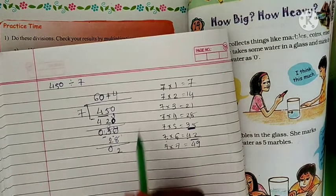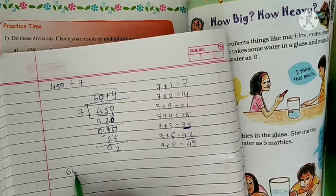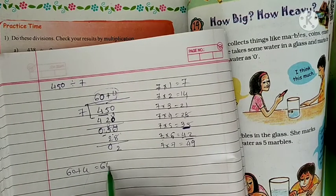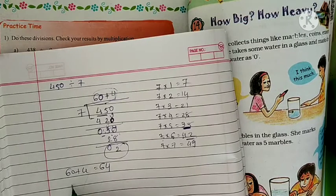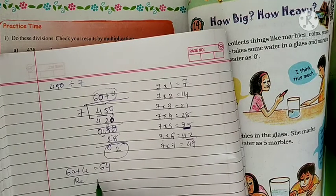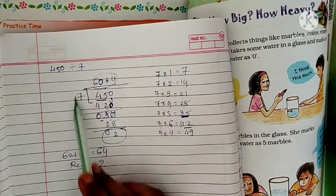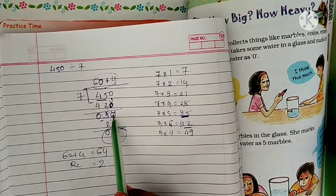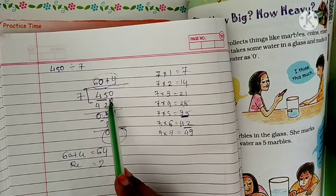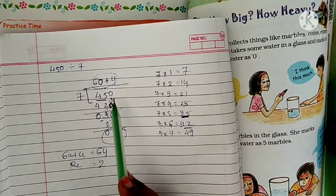Now, what is the quotient? Quotient is 60 plus 4, quotient is 64. Remainder is 2. And how can we check this answer? Cross check. Is this answer right or wrong?